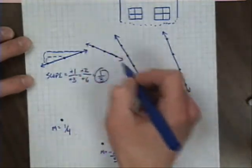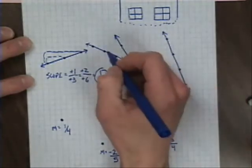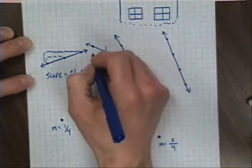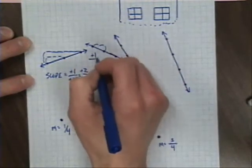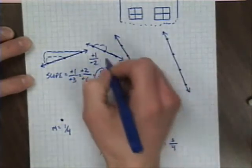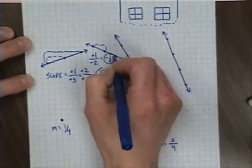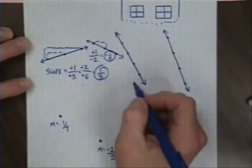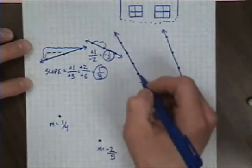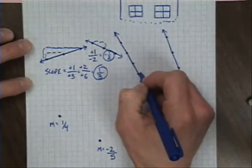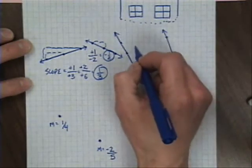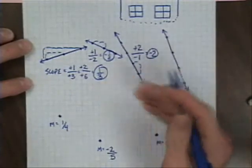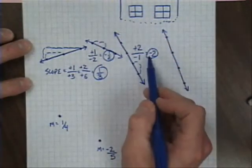The second line has a similar steepness but goes in the opposite direction. From one point to the next, I go up one but left two, and left is negative. So this produces a negative one-half slope — different direction, slightly steeper. The third example looks negative again. This one goes up two, left one, giving a slope of negative two. That's significantly steeper than the previous one, but it is still negative.